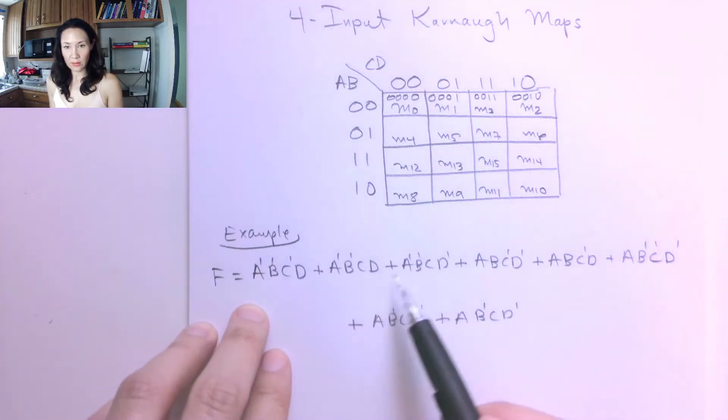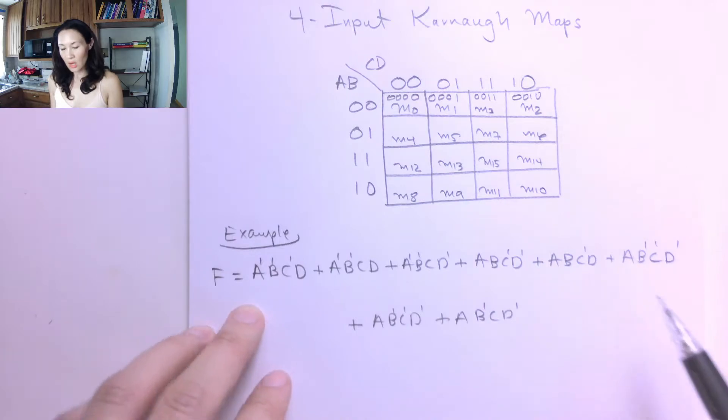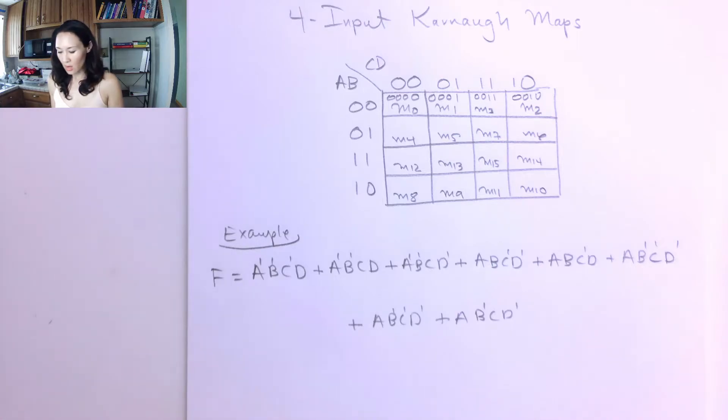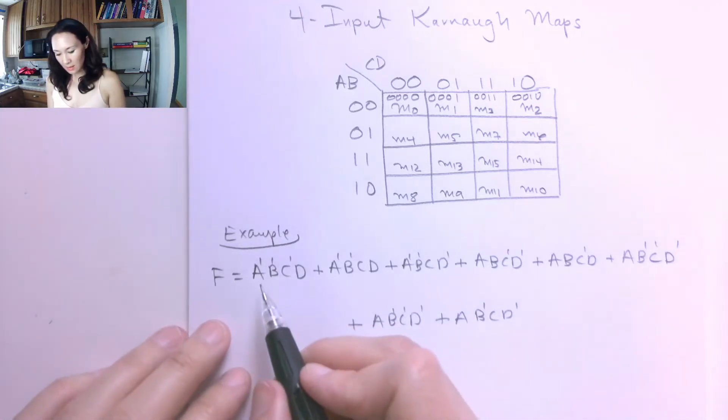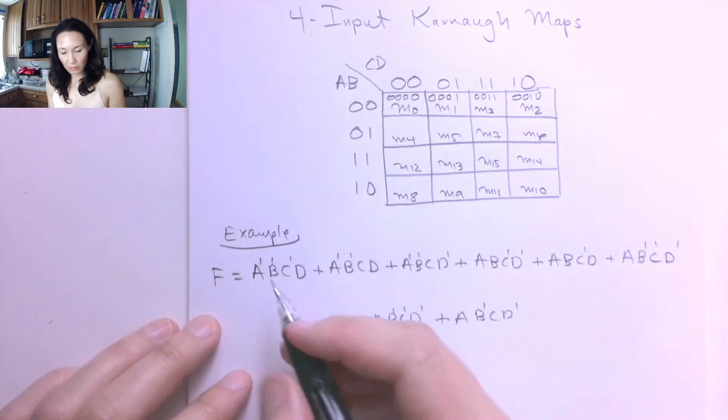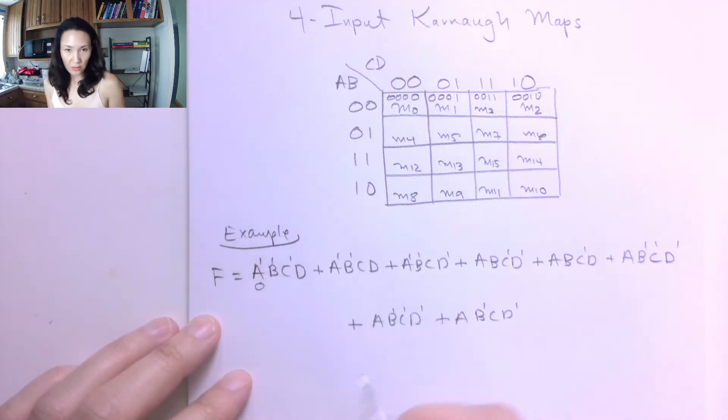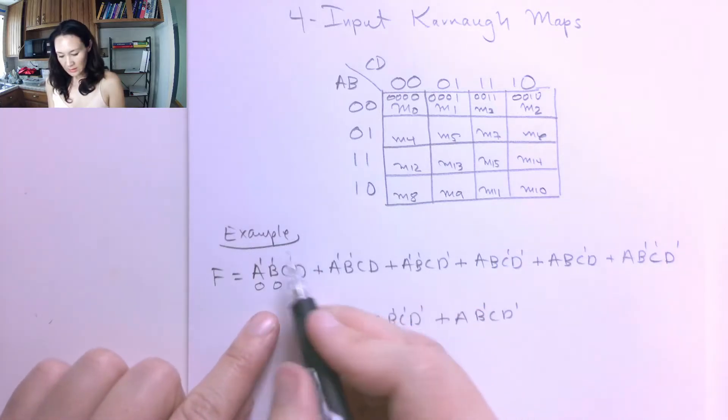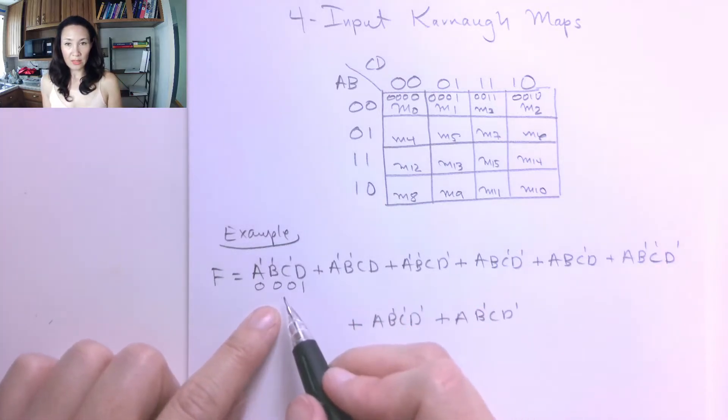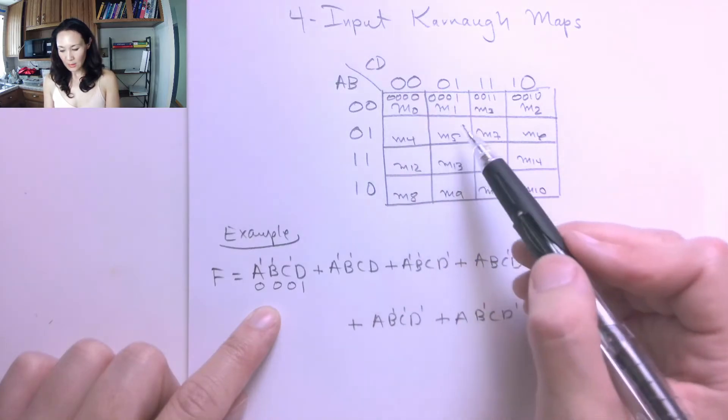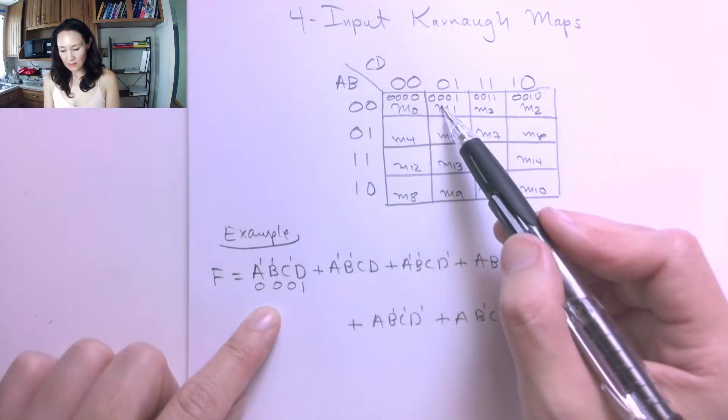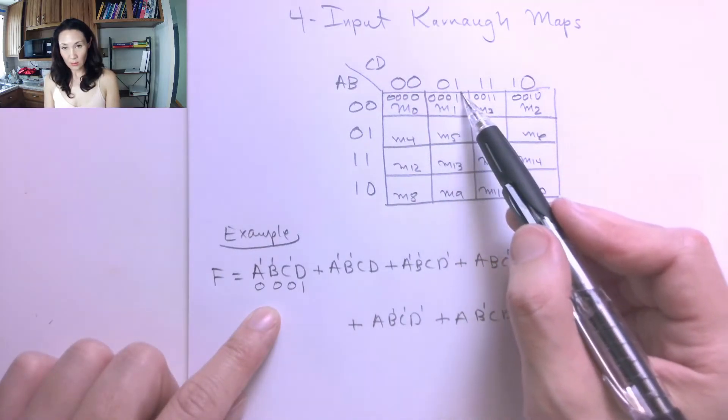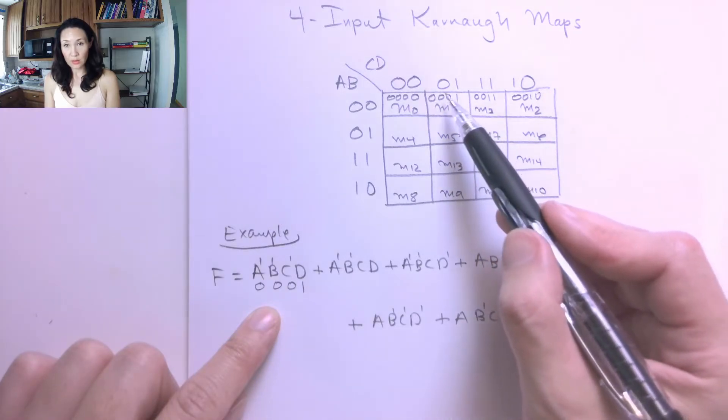You can see all the literals that are complemented or not complemented. We could make a 16 row truth table and figure out what inputs correspond to these literals. Or I like to do this little shortcut. And that is wherever I see a literal that's complemented, I just put a 0 underneath it. So this gives me 0, 0, 0, 1. So now I know that the location of my truth table is going to be where A and B is 0 and C and D is 0, 1. So that's going to be this min term 1 location.